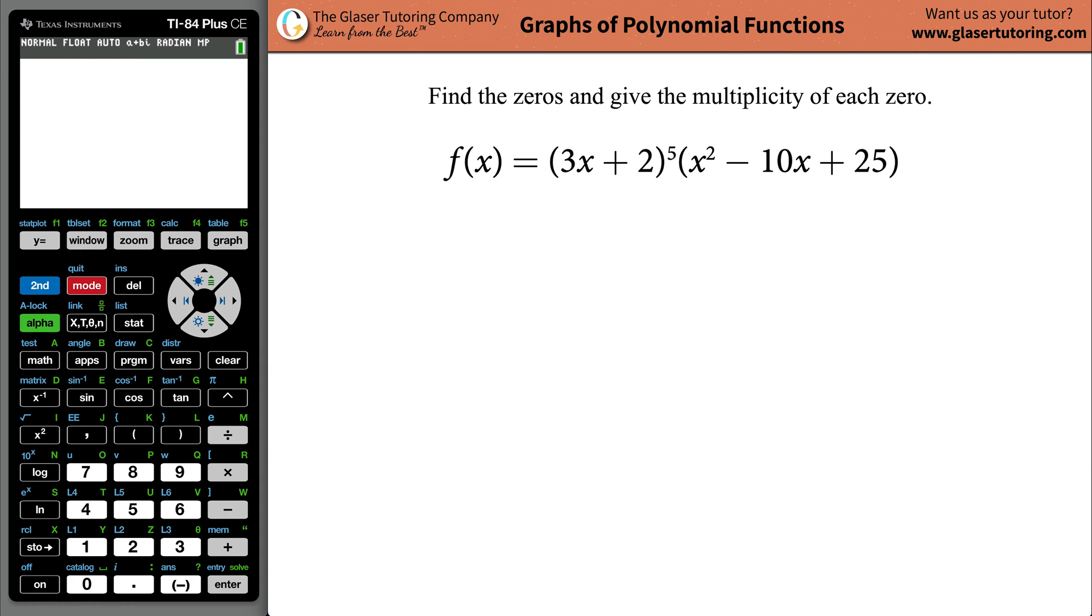Hello, I'm Andrew. Today I would like to teach you how to find the zeros and give the multiplicity of each zero of the given function 3x plus 2 raised to the fifth multiplied by x squared minus 10x plus 25. So the first thing is to find the zeros. What that basically means is that you want to find the x values when the function's overall value is equal to zero.